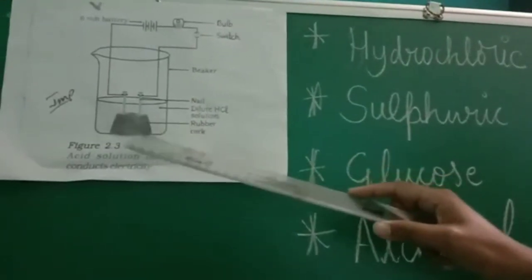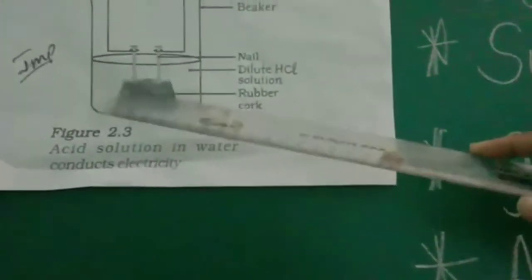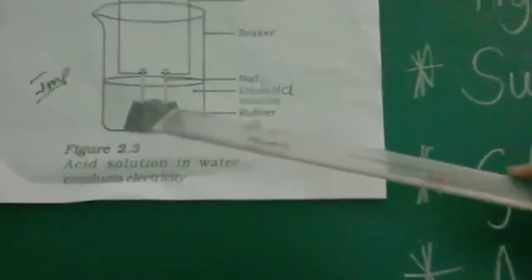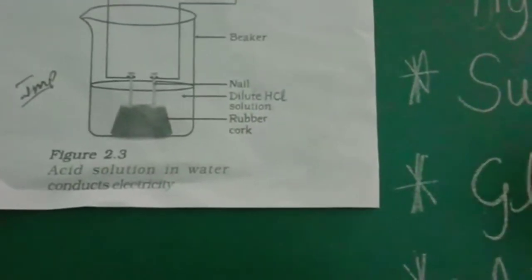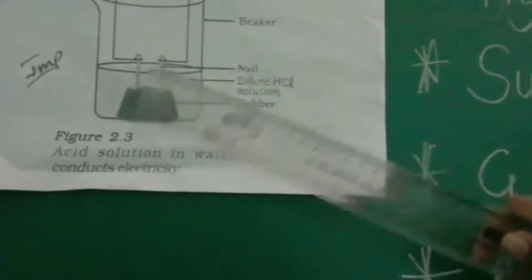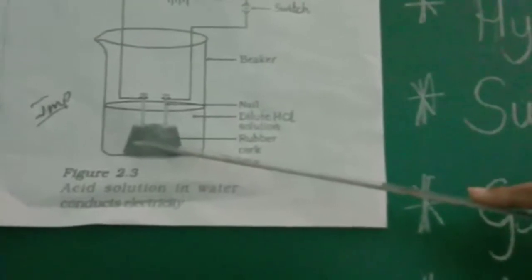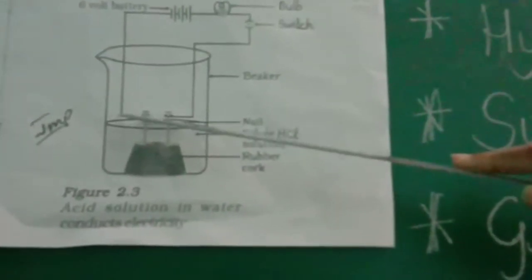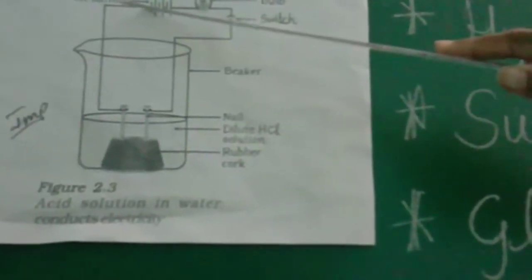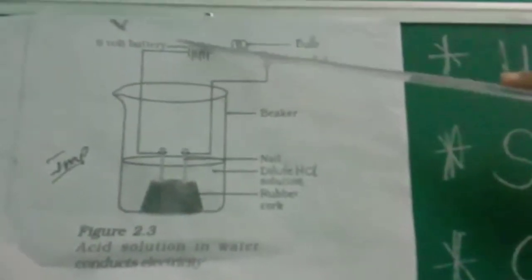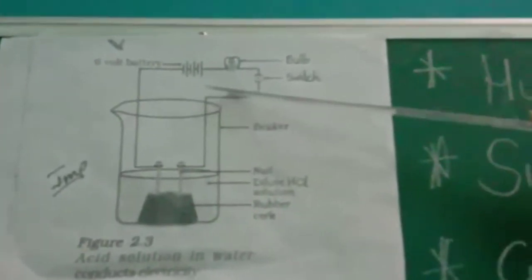Whatever this black color thing you can see here, this is a rubber cork. And there are two nails fixed to the rubber cork. Now connect this nail to this rubber cork, and you have to connect two different wires. One end of the wire of one nail is connected to one end of the battery — whatever the lines you can see here, those are the battery. And one more end of the nail is connected to a switch — whatever the open bracket content you can see, that is a switch.